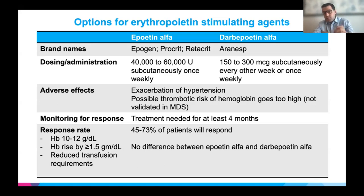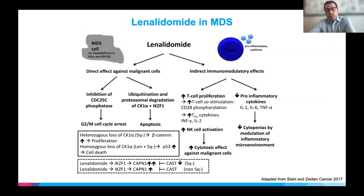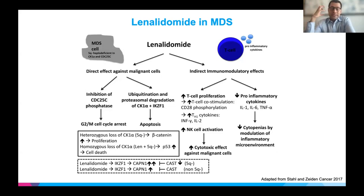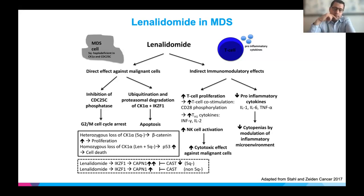Lenalidomide is another drug used frequently to improve anemia. It has many complicated mechanisms of action that we're still trying to understand, but it really attacks the malignant stem cells that cause MDS. It also causes changes in the immune system to improve cytopenias by reducing inflammatory cytokines that prevent the bone marrow from making red blood cells, and helps the immune system find and attack MDS cells. It works in many different ways to try to improve anemia in MDS patients.